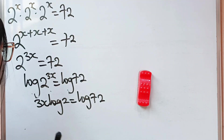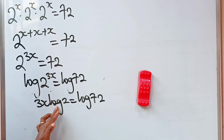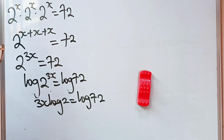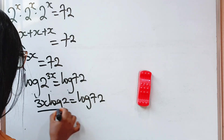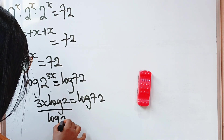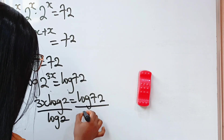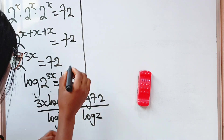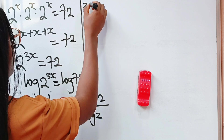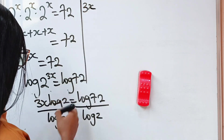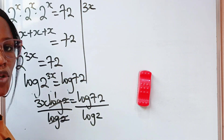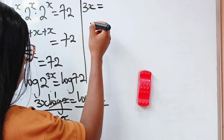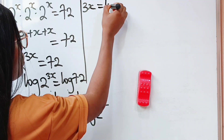So to get the value of x, let's divide both sides of this equation by log 2. So we have this side divided by log 2 and this side divided by log 2 as well. What we have is 3x, because log 2 will divide itself to give us 1, so 3x is equal to log 72 divided by log 2.